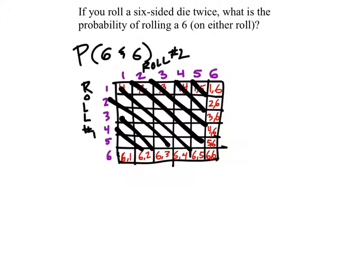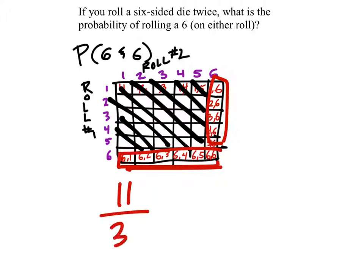So how many of these spaces are there with a six in them? There's six. And so we got these six and then these five. That gives us 11 possible outcomes out of the six times six would be 36.